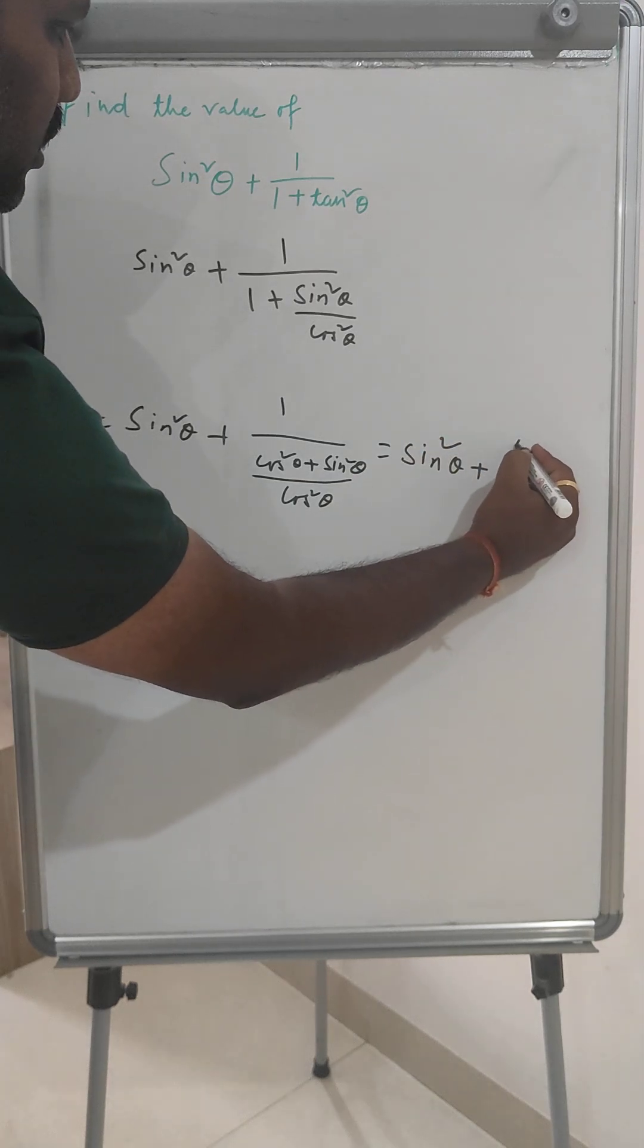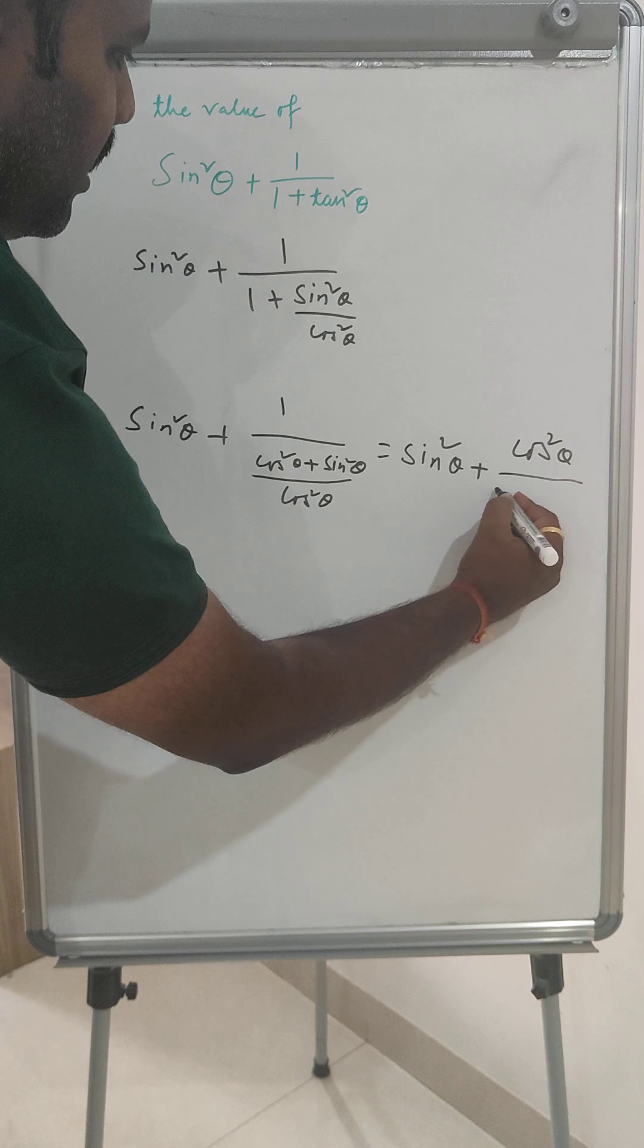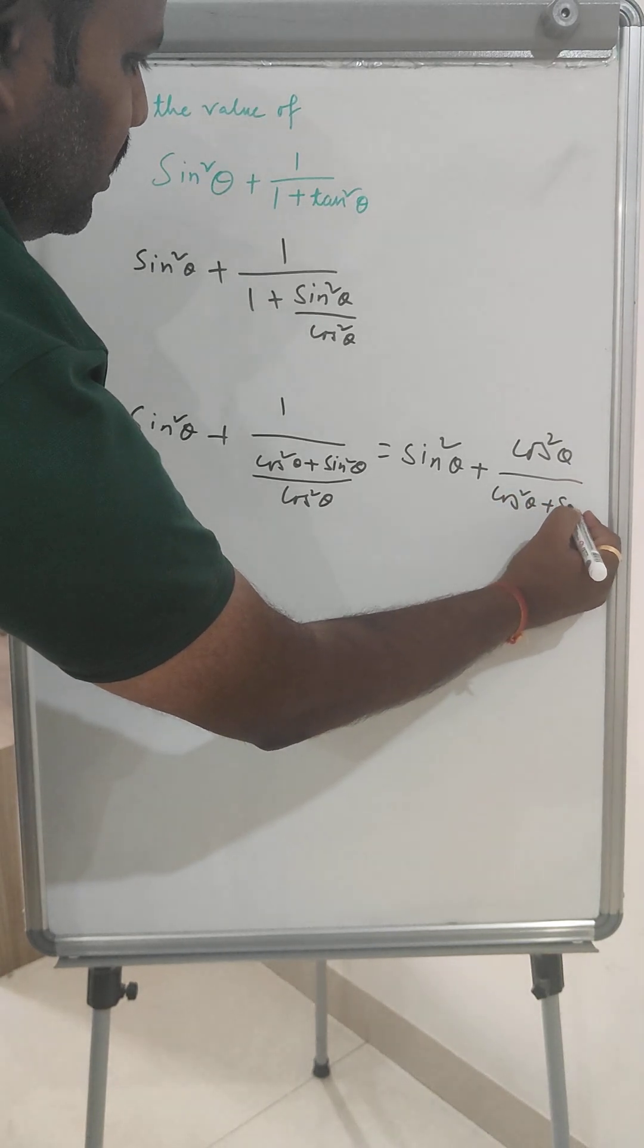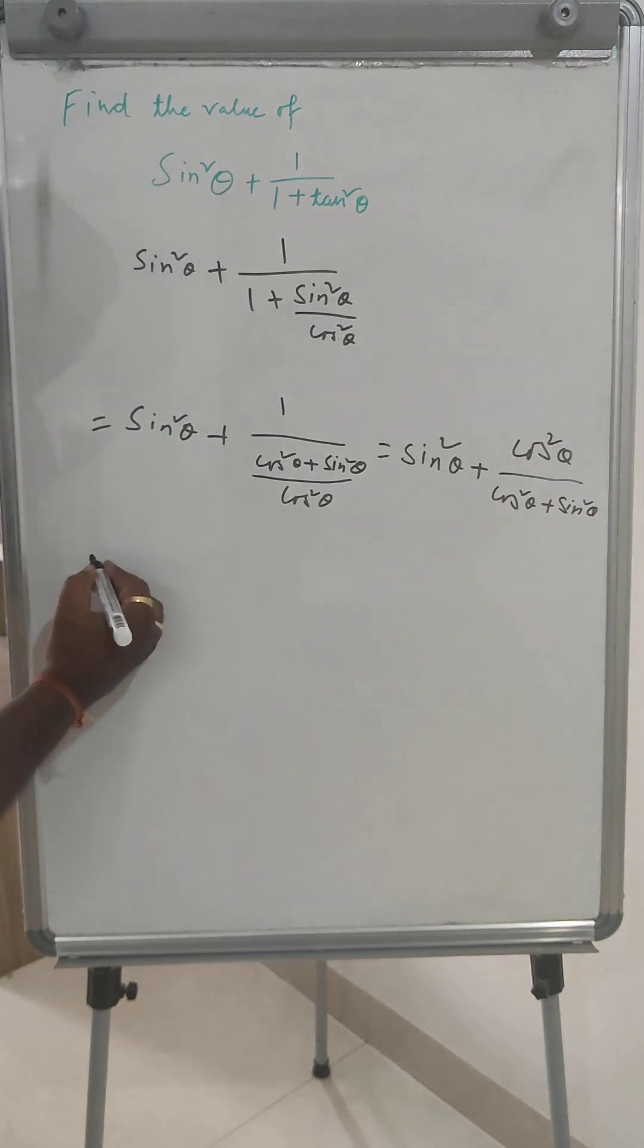We write then cos²θ and cos²θ plus sin²θ. Then this will become 1.